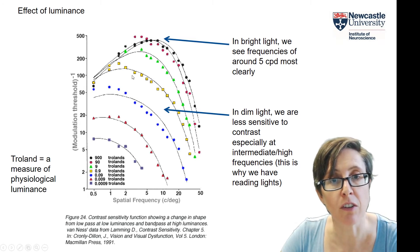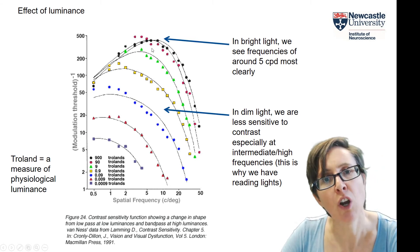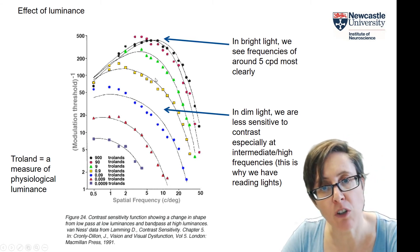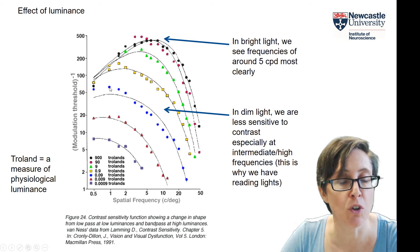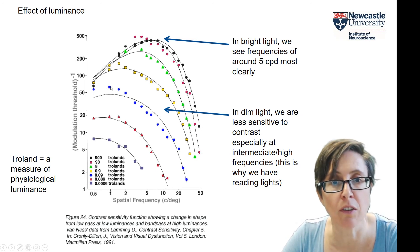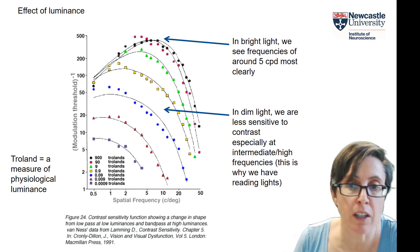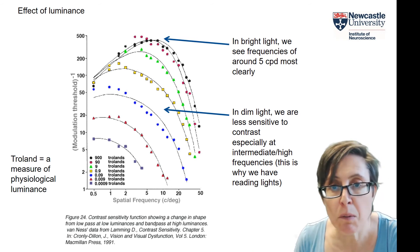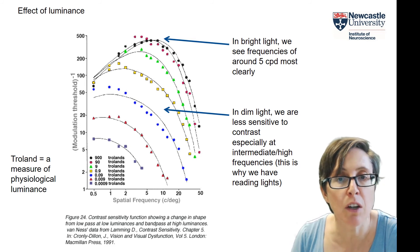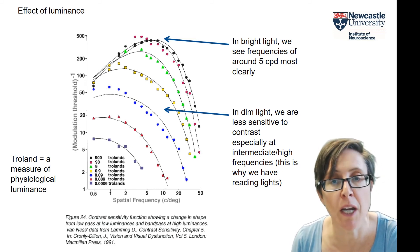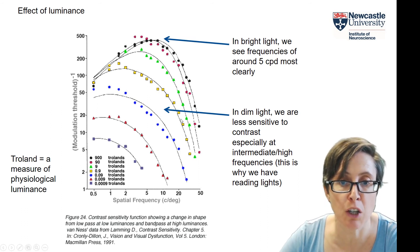As you lower the light, two things happen. First, the peak sensitivity goes down, so we're less sensitive to contrast in dim light. Also, the fall-off is most profound at high spatial frequencies, with much less fall-off at low spatial frequencies. So in dim light we're less sensitive to contrast overall, but especially at intermediate and high frequencies. That's why we have reading lights — it's hard to read fine detail like text because we need those high spatial frequencies to discriminate the letters, and if the contrast sensitivity is too low, we'll be straining to read. It's nice to read in high-luminance conditions to increase our contrast sensitivity.